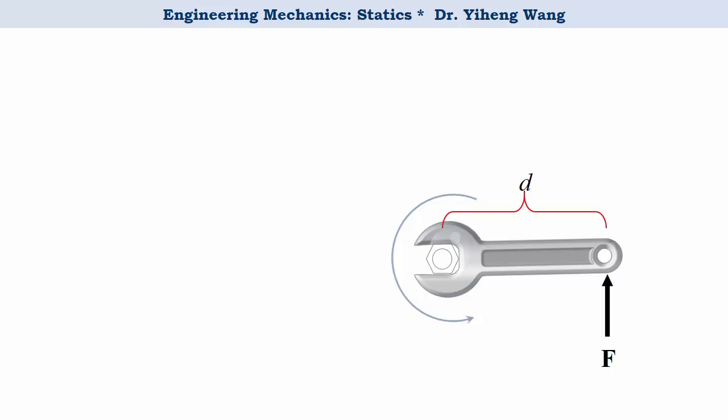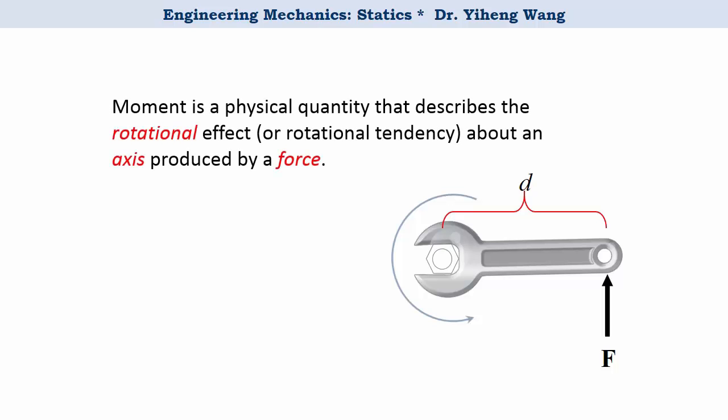Therefore, moment is defined in order to quantify this rotational effect caused by a force about a certain axis. In this example, the axis is perpendicular to the plane, and you can imagine it as an arrow shooting out from point O, and you can only see the head of the arrow represented by a dot.